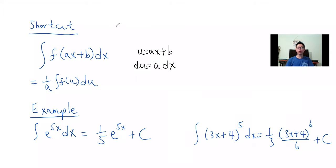Here we have a quick shortcut when it comes to u-substitution. If you have the integral of f(ax+b)dx, if u is ax plus b, du will just be a dx. Divide a over, we are just doing the integral of 1 over a times the integral of f(u)du.